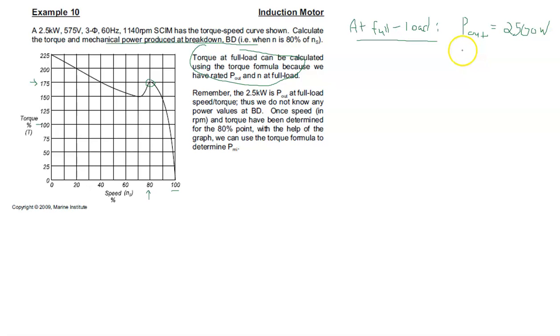We also know that speed is approximately 1140 RPMs. Therefore, the rated torque, the 100% torque, which is an output torque, and we can call it rated...